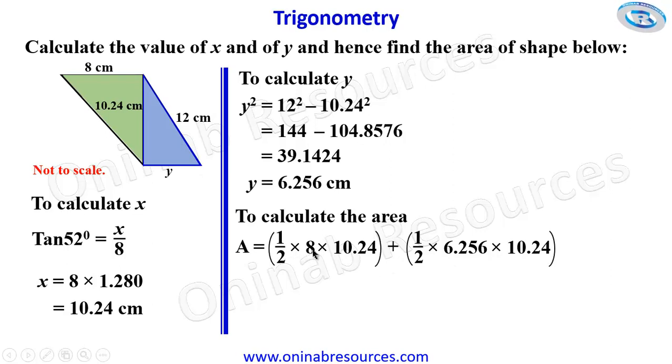Simplifying this, we are going to have 40.96 plus 32.031 after simplifying half times 6.256 times 10.24. So adding up these, we have 72.991 square centimeters representing the area of the shape, which is comprising of two right-angled triangles of different dimensions.